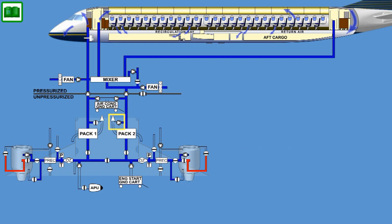The Pack-2 Ram Air Ventilation consists of a check valve installed in the emergency Ram Air ducting that connects the Ram Air duct to the Pack-2 outlet ducting. The emergency Ram Air check valve does not require electronic control. The emergency Ram Air check valve will be open whenever the pressure in the Ram Air ducting is greater than cabin pressure.